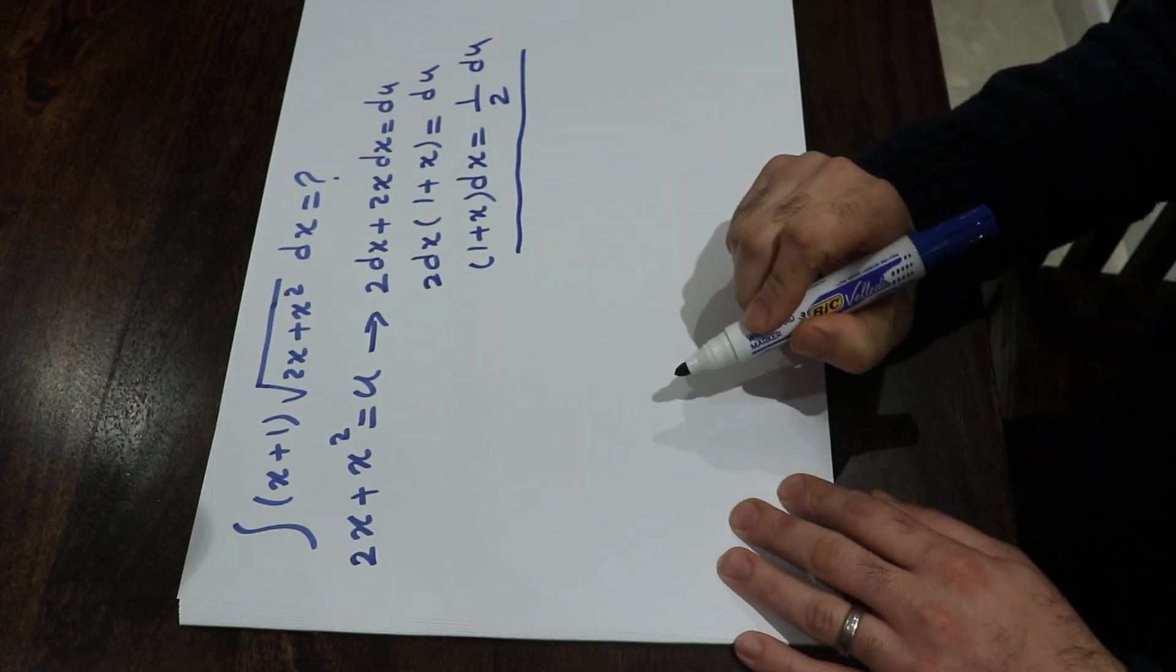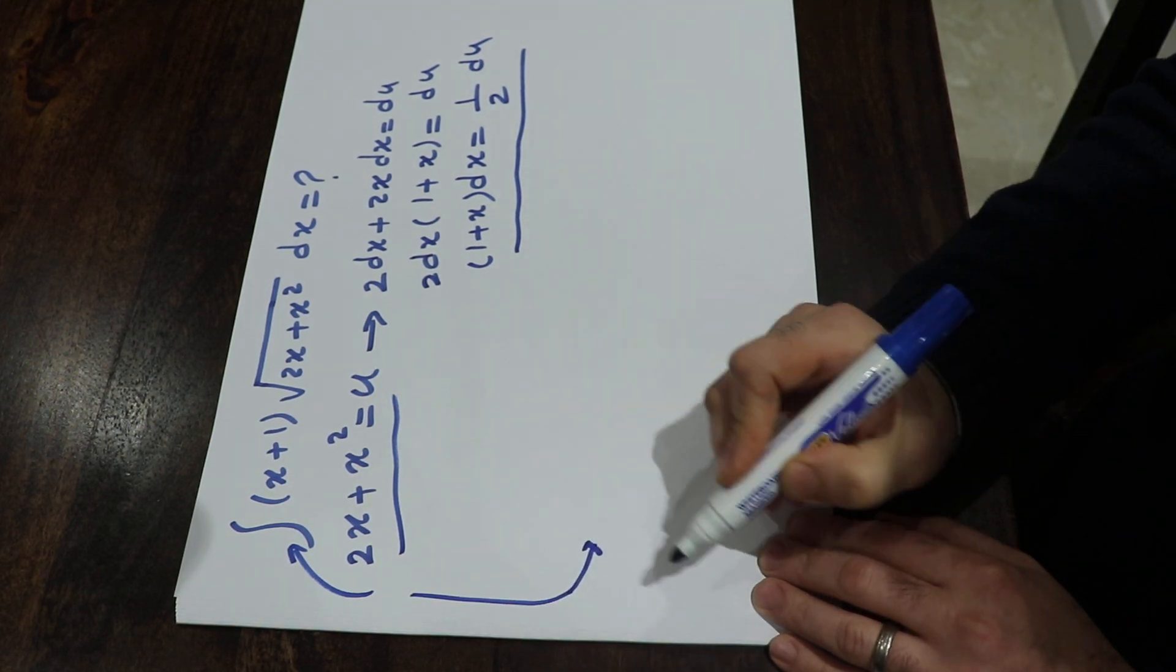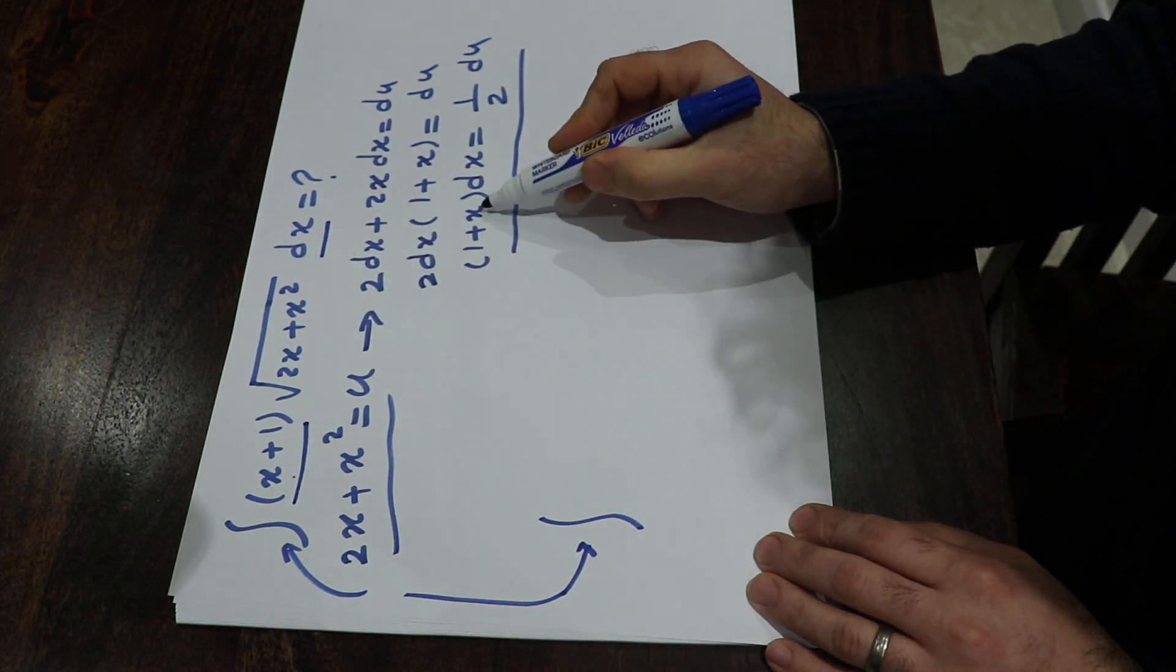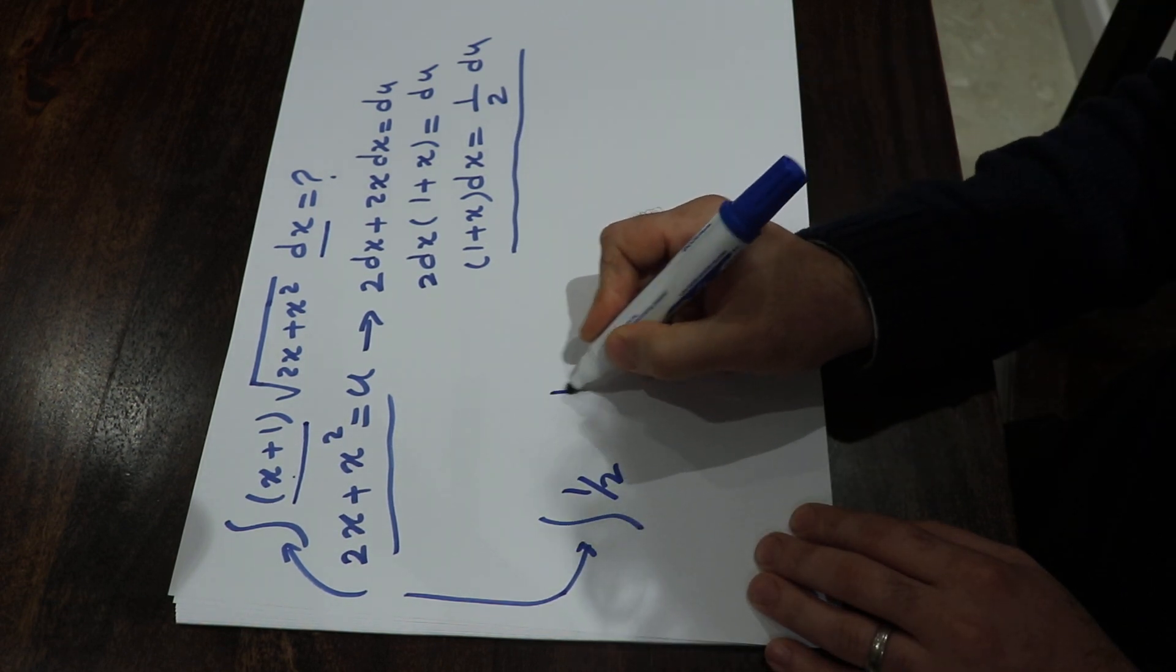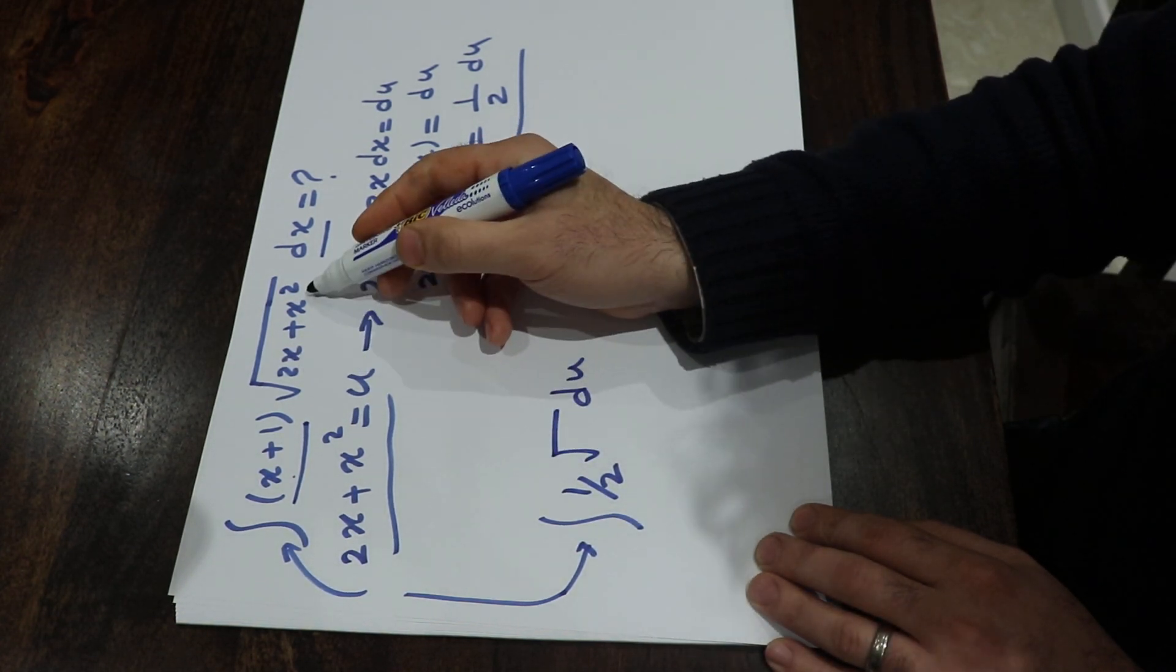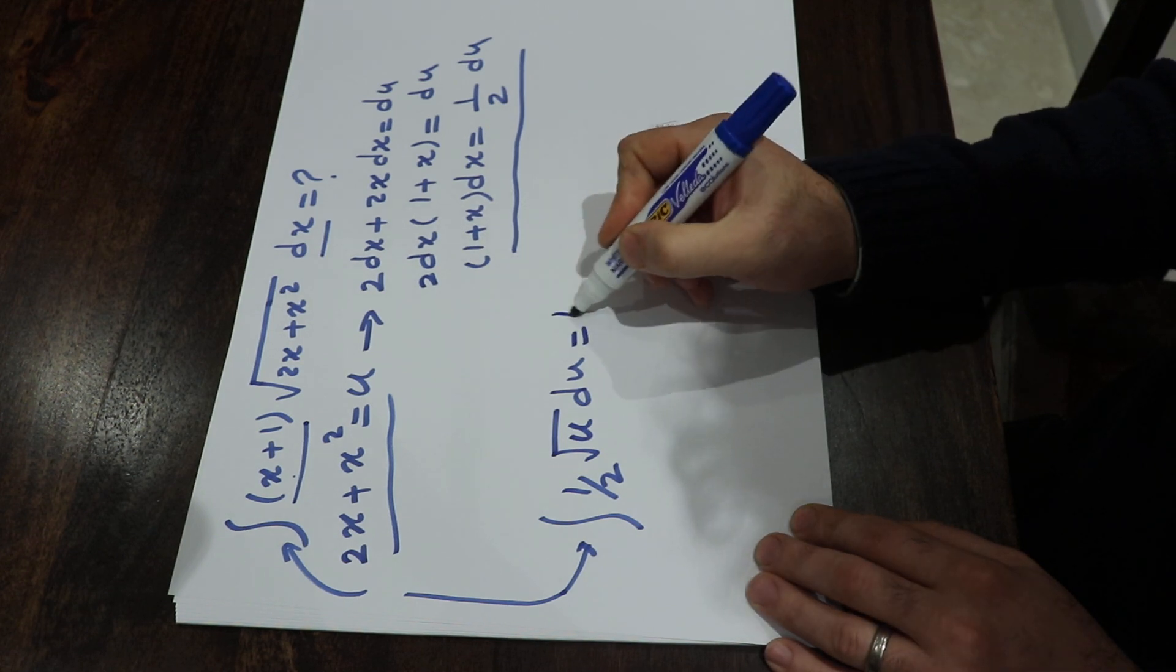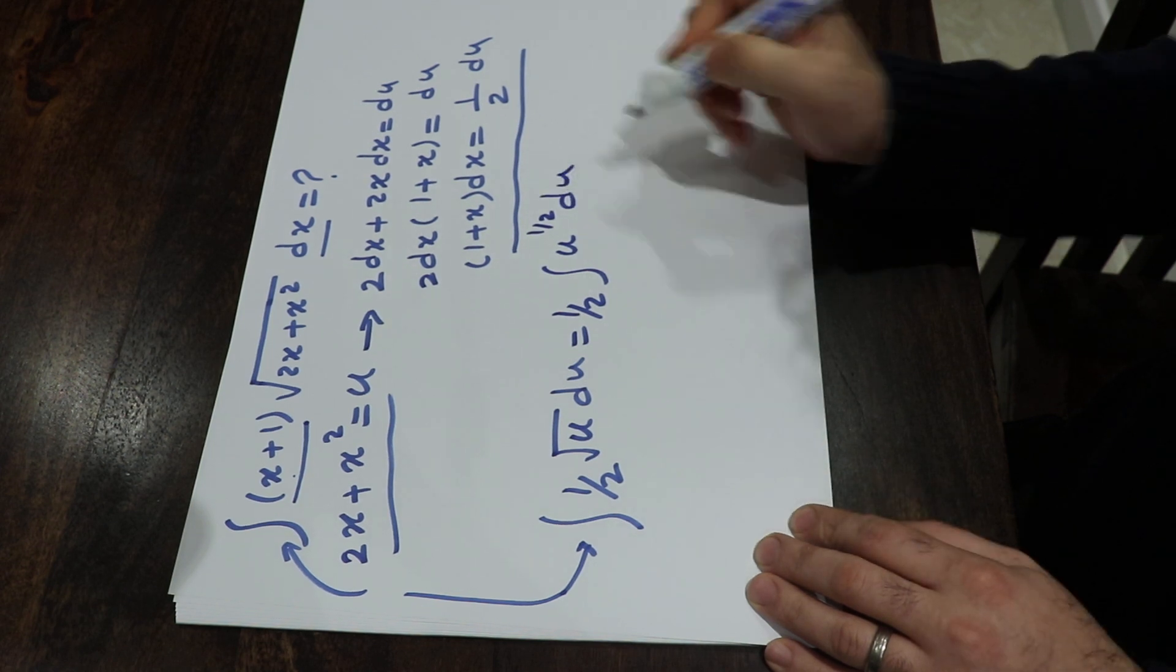So if I substitute this expression into this integral, then I can rewrite this integral as, instead of x plus 1 times dx, I write 1 divided by 2 du. And instead of a square root of 2x plus x², I write a square root of u because 2x plus x², we are representing that with u. So this integral will be 1 divided by 2 times the integral of the square root of u du.